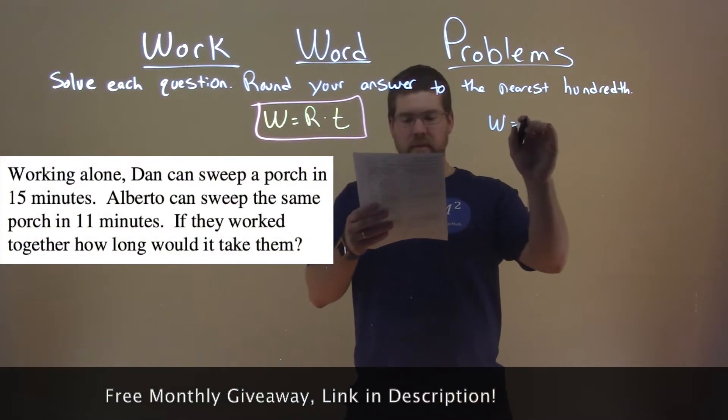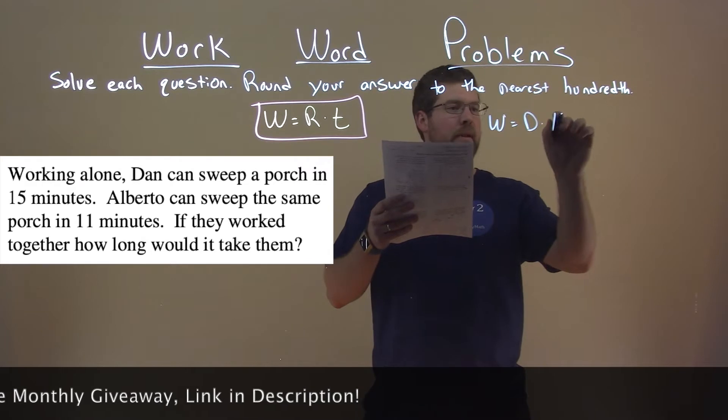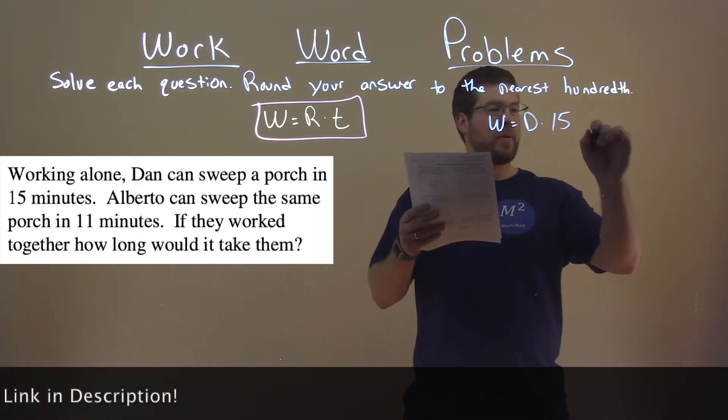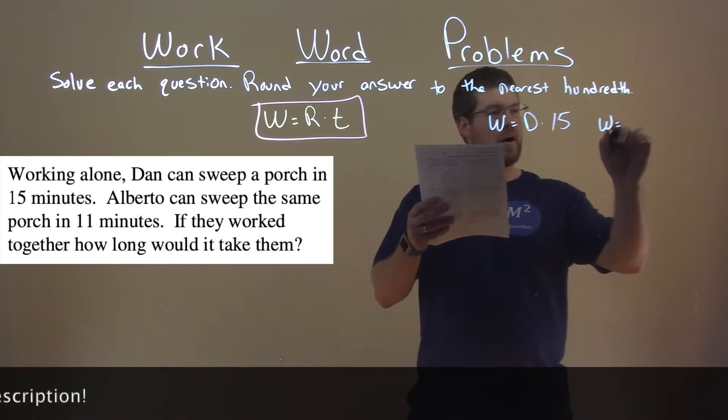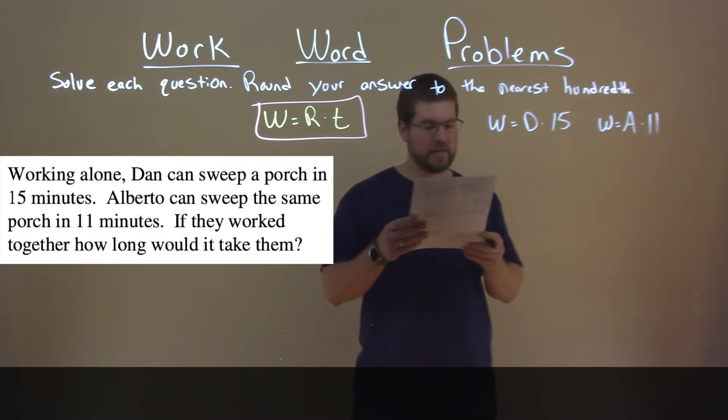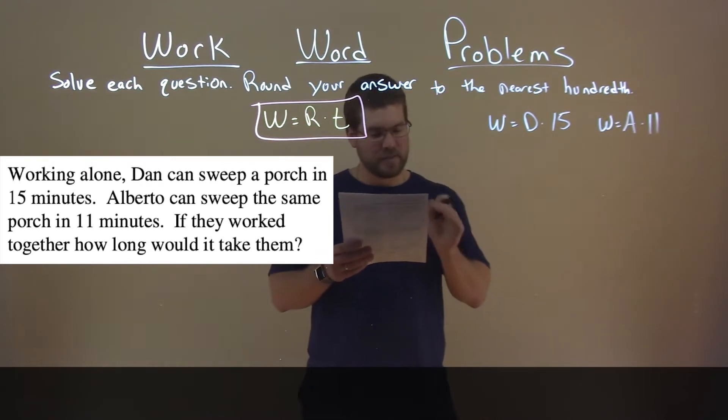Our work here is equal to Dan's rate times 15 minutes. The same work, we have Alberto's work rate, is multiplied by 11 minutes, equals the total job that's done, which is sweeping the porch.